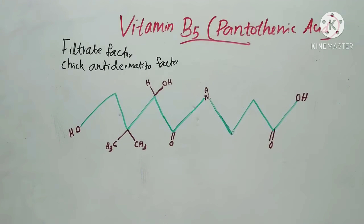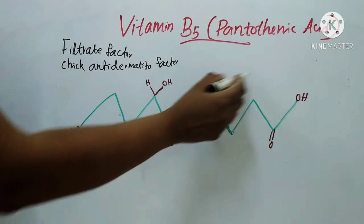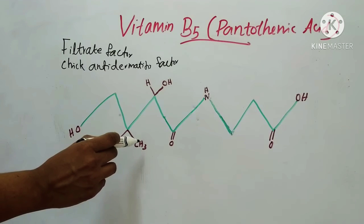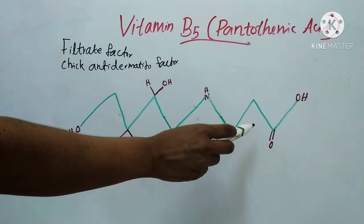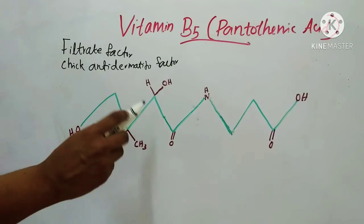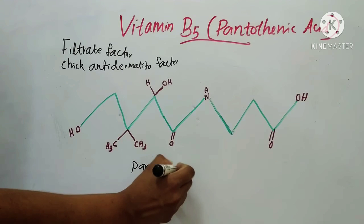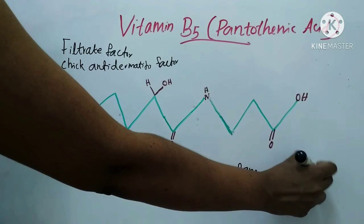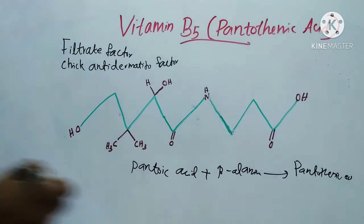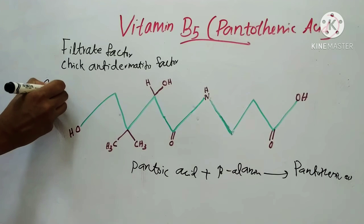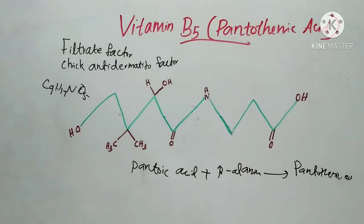Pantothenic acid consists of beta-alanine in peptide linkage with a dihydroxy dimethyl butyric acid. This dihydroxy dimethyl butyric acid is called pantoic acid. So, pantoic acid and beta-alanine together form pantothenic acid. The free acid is soluble in water and is hydrolyzed by acids or alkalis. It is thermolabile and destroyed by heat. It is represented as C9H17NO5.